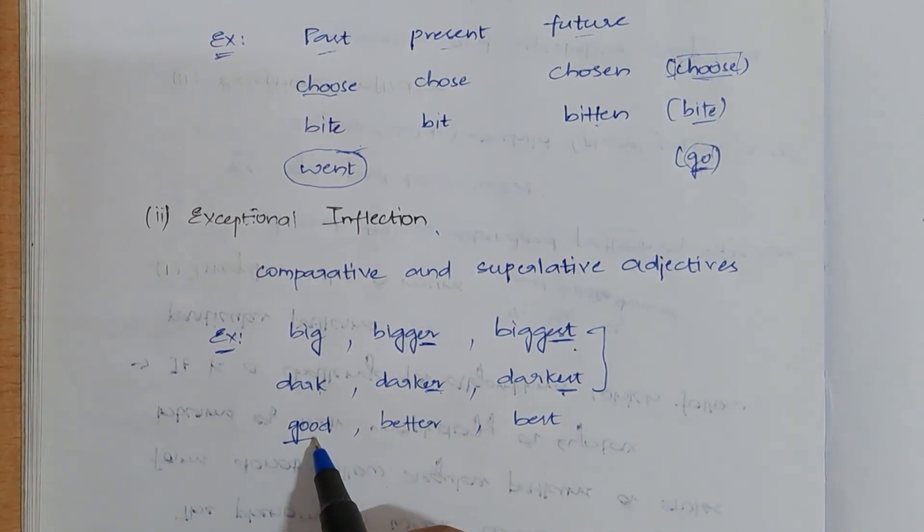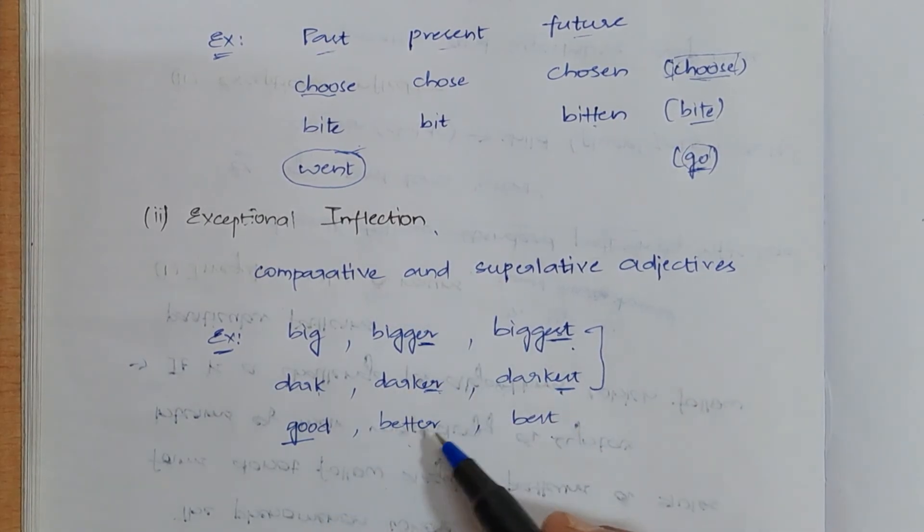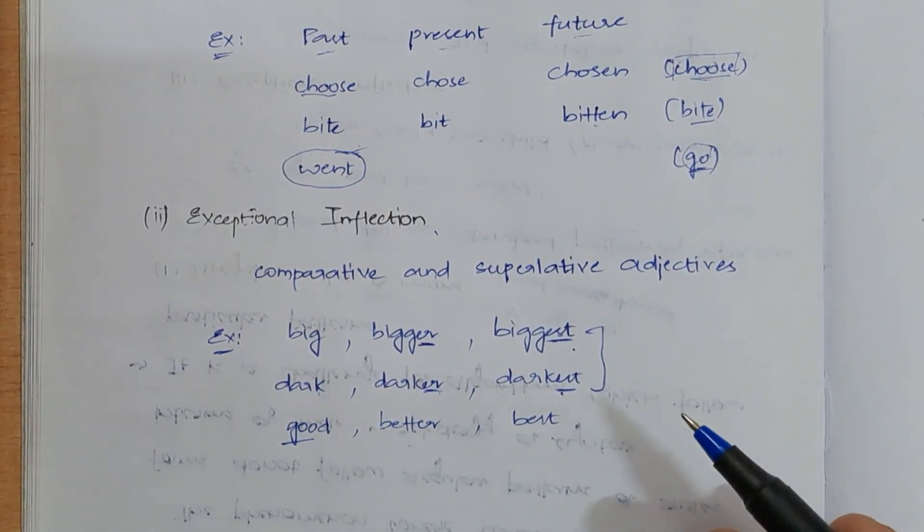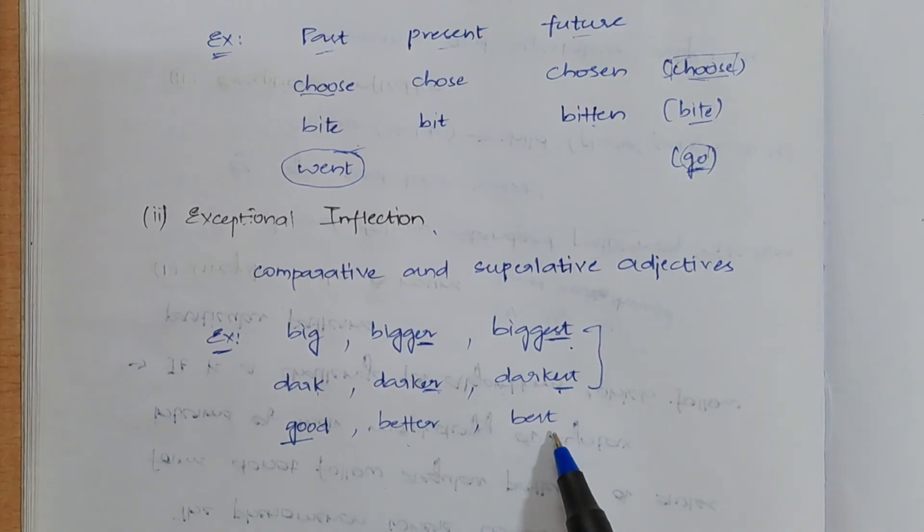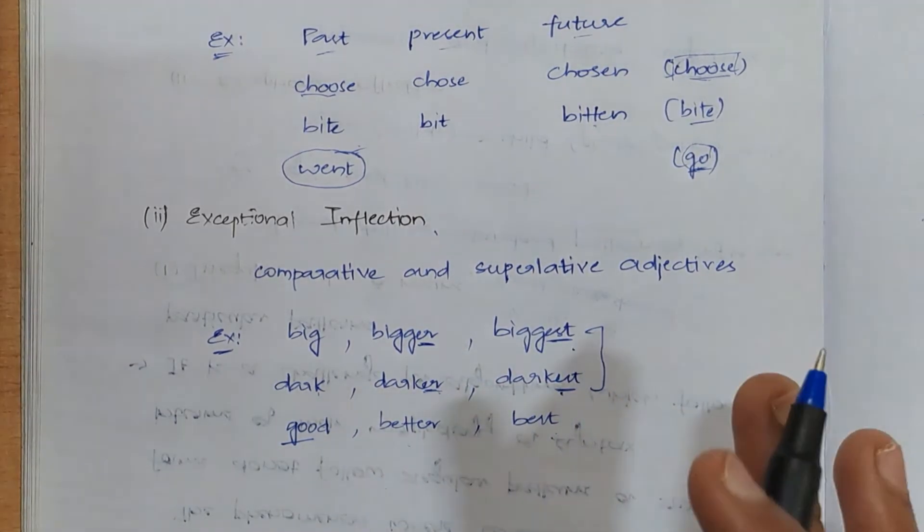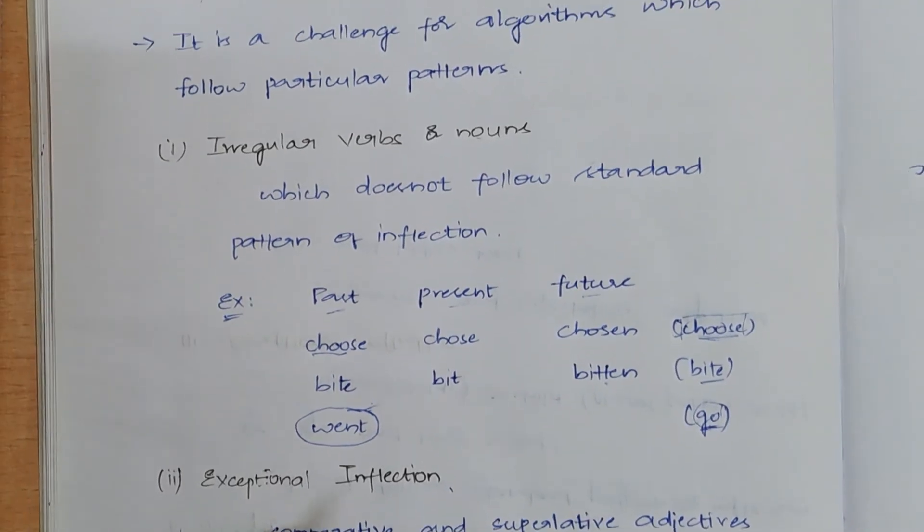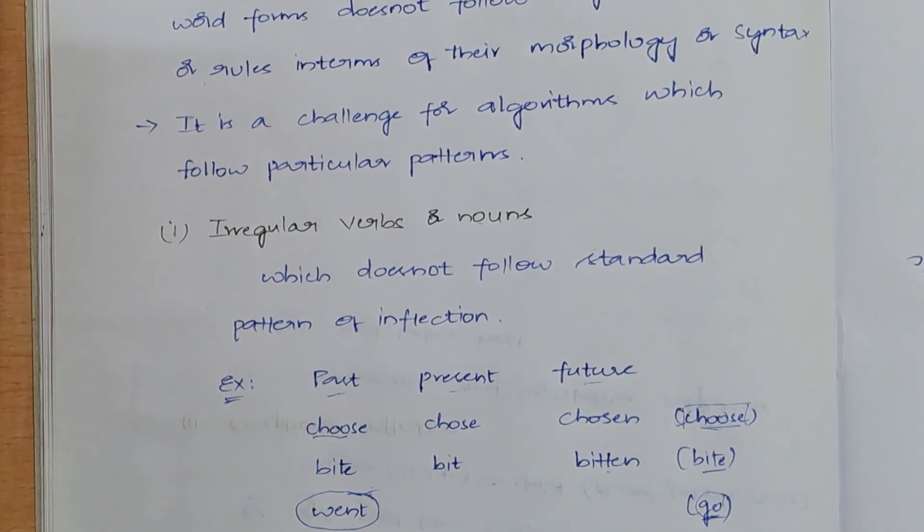But when you take an example of good, better, best is the comparative and superlative adjectives of good. But what the algorithm thinks is it should be gooder, goodest. Like that, it will think. But it is actually better and best. These kinds of words are mainly causing the irregularity. These kinds of words are called as irregular words.